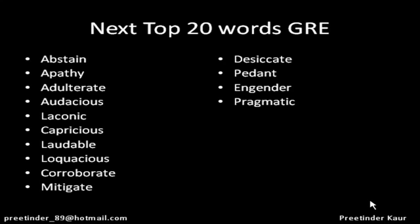The next word is ephemeral, which refers to something that exists for a very short period of time and does not last long. The synonyms are transient, transitory, and fugacious. For example: the mayfly has an ephemeral lifespan of just a few hours. So ephemeral means that which does not have a very long time period.